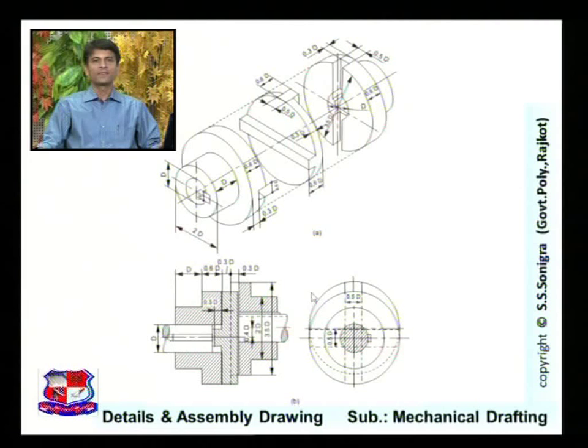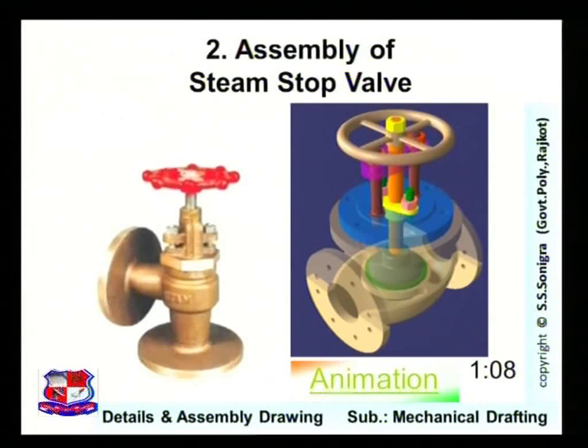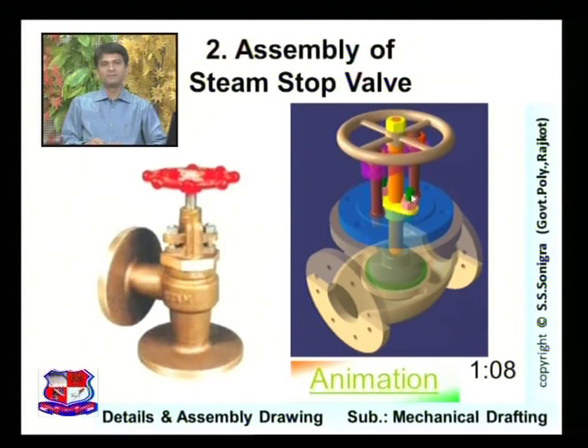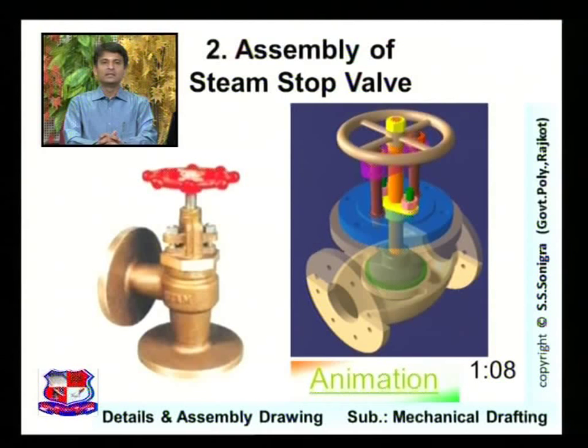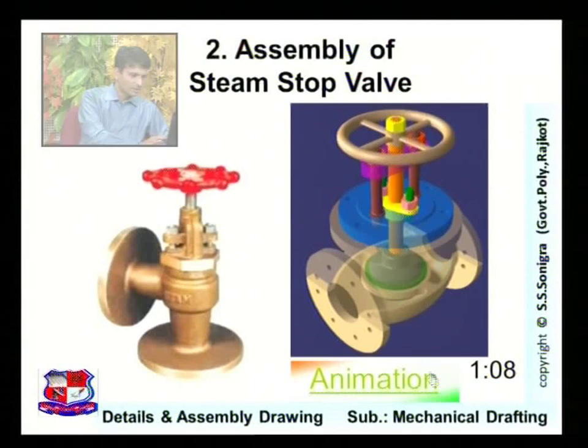The detail drawing and assembly drawing of Oldham coupling should now be clear. We will now study another component: the assembly of a steam stop valve. This is a typical steam stop valve and this is a model drawn using Solid Edge. We will first see how the steam stop valve works, and then draw the detail drawing and assembly drawing of this valve, which is used to control the flow of steam in a boiler.